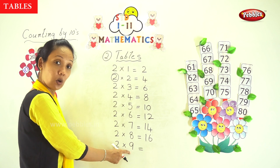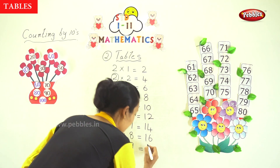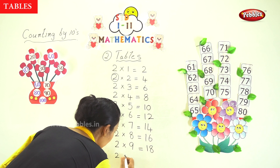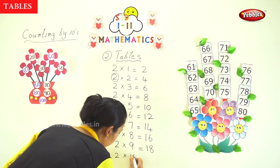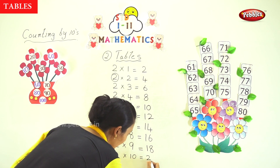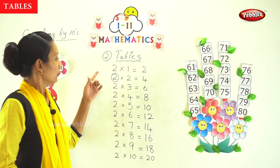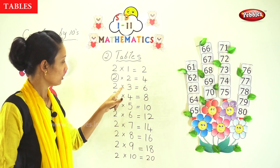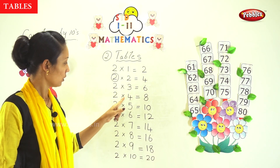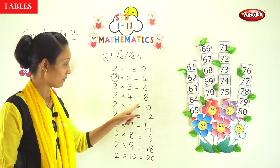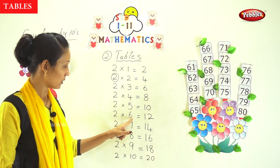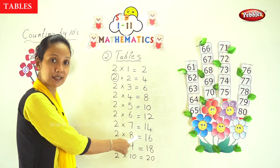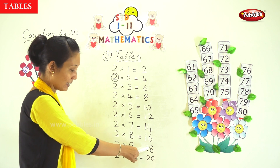2 into 9 — same way. 2 into 10. Once more, the full table: 2 into 1 is 2, 2 into 2 is 4, 2 into 3 is 6, 2 into 4 is 8, 2 into 5 is 10, 2 into 6 is 12, 2 into 7 is 14, 2 into 8 is 16, 2 into 9 is 18, 2 into 10 is 20.